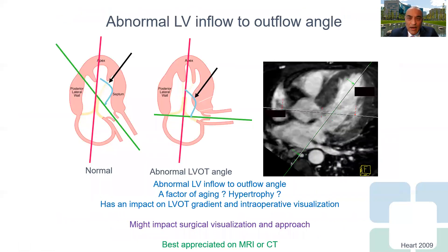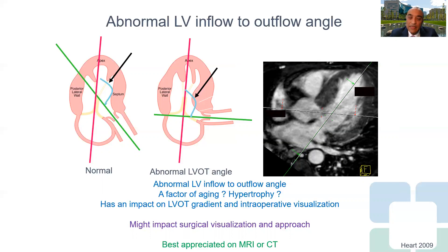Another thing we have recognized in our practice is that as patients get older or the basal septum becomes very hypertrophied, the angle between the LV inflow and LV outflow becomes significantly abnormal — significantly closer to a right angle. This has an impact on outflow tract gradient and intraoperative visualization, and might impact the surgical approach as well as the extent of surgery. In our experience, this is best appreciated on either cardiac MRI or cardiac CT.